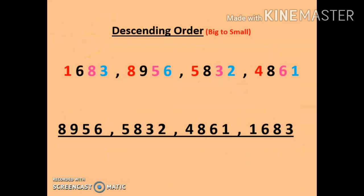Now let us understand what descending order is. Descending order means big number to small number. We are given the same 4 numbers: 1683, 8956, 5832, and 4861. We have to arrange these in descending order.